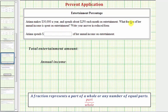To find this fraction, we want to form a ratio comparing the total amount of money spent per year on entertainment to her annual income.